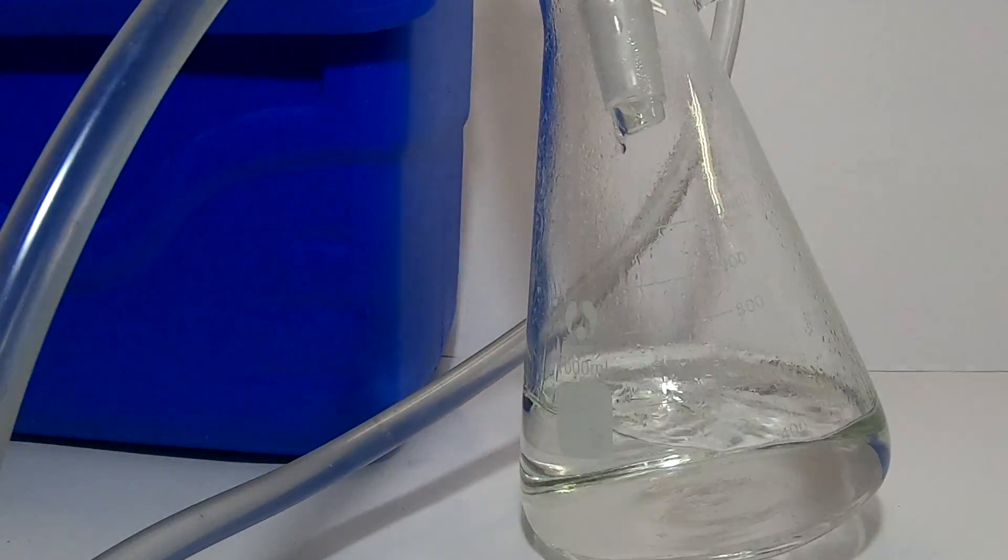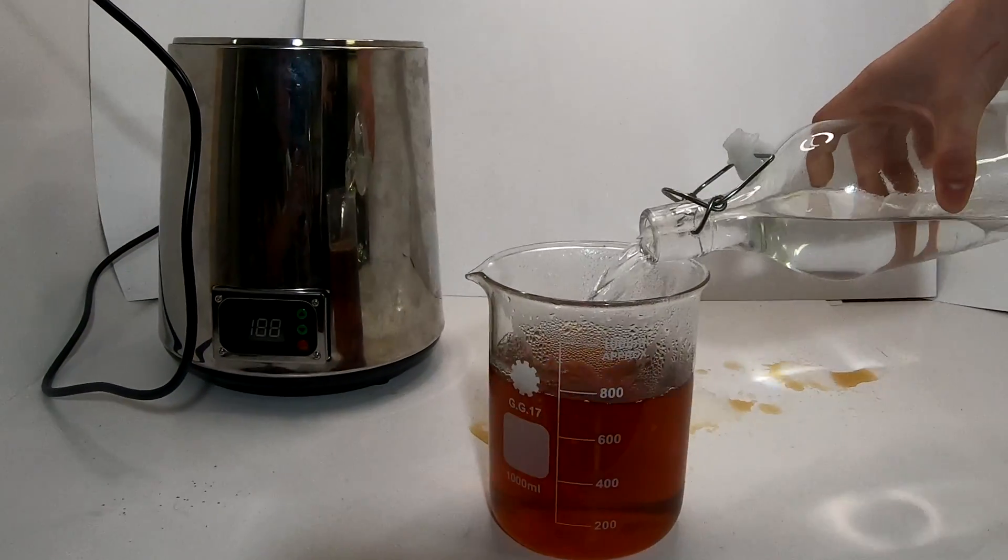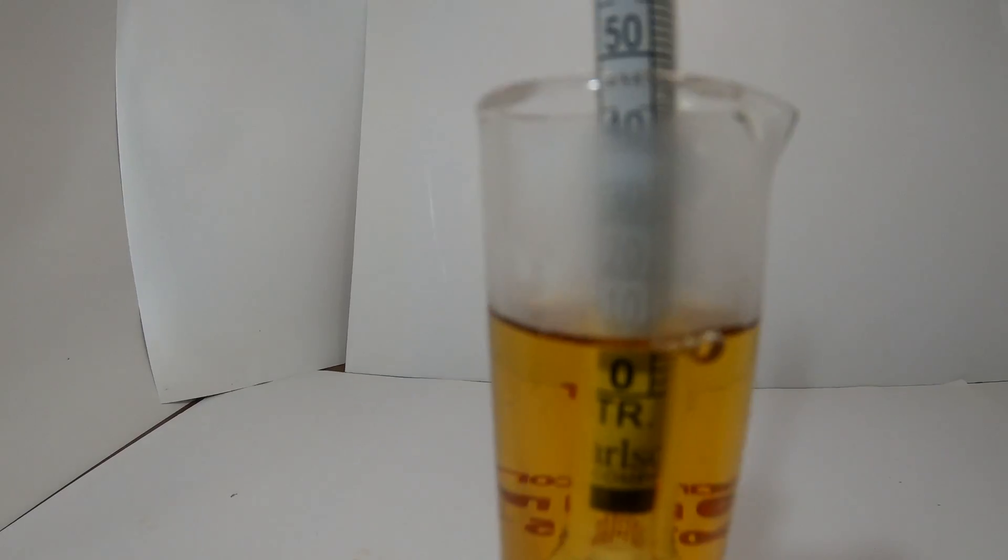I mixed the leftovers from the two batches together and distilled them at 90 degrees celsius to get the rest of the alcohol out as it was still about 10% content.